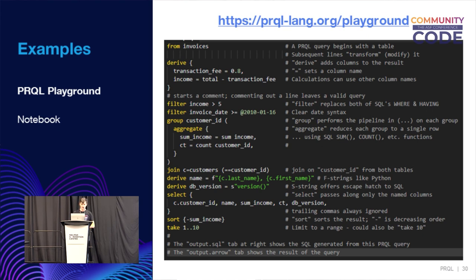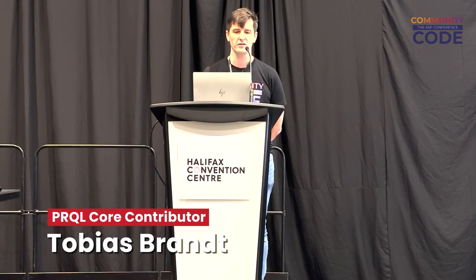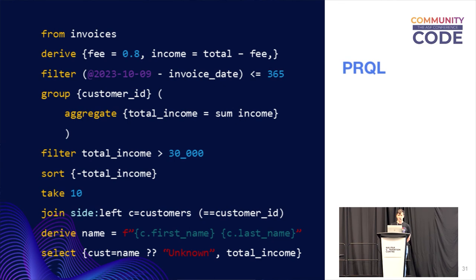I've also prepared a notebook. Let me go through this example. In the first line we start with 'from invoices,' which I think everyone agrees is how SQL should have been — DuckDB adds that natively even in SQL. Next we have 'derive,' which allows you to derive new columns. We define a constant column of a fee, and another column 'income' which takes the values in the total column and subtracts the fee. Then we have a filter using a date literal for today minus the invoice date, which automatically generates the correct date functions — always a pain between different versions. We filter where that is less than 365 to find all invoices from the last year. We then group by customer ID and aggregate by summing the income — aggregate always produces a single row, so this produces one row per customer ID.